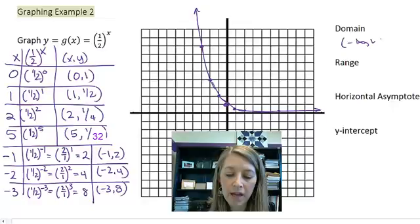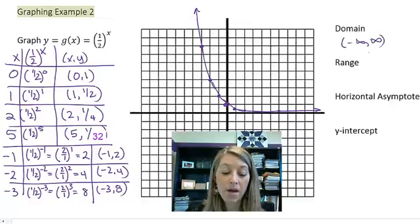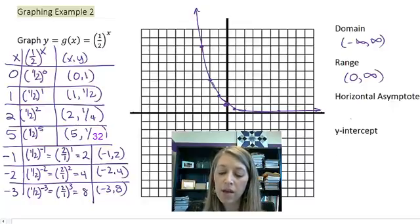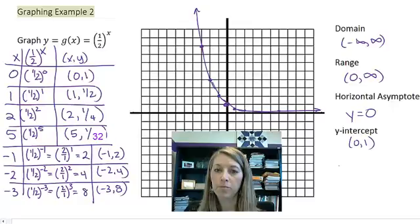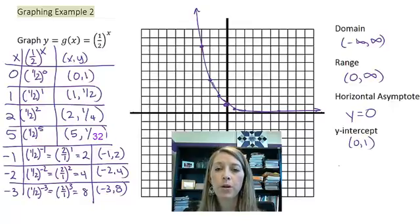My domain, I can still plug in every single x value. My range is still the same. It starts at 0 but doesn't include it all the way up to infinity. My horizontal asymptote is still at my x-axis. And my y-intercept was the same place, 0, 1. So we have done some basic graphs of exponential functions. In the next video, I'm going to define all the characteristics of exponential functions and how we can adjust them using the transformations that we've previously learned.